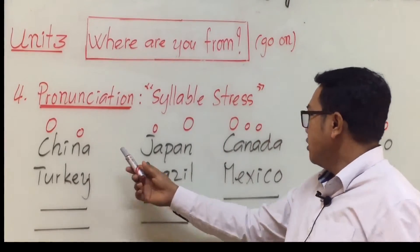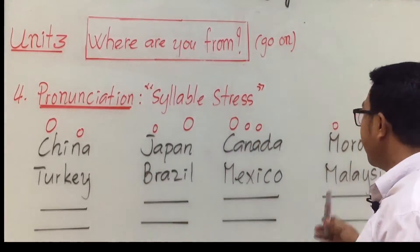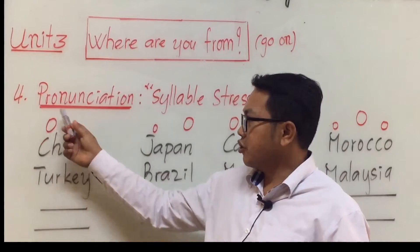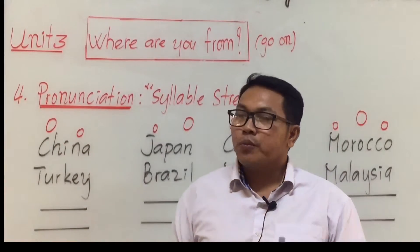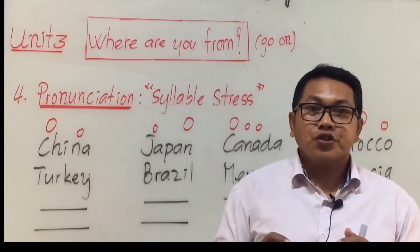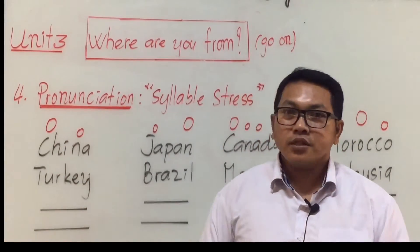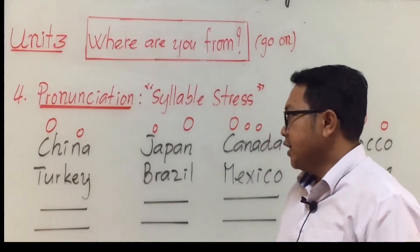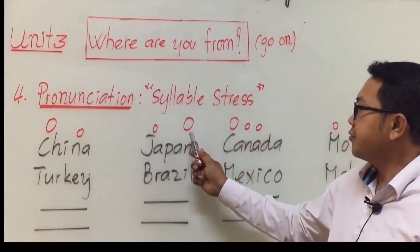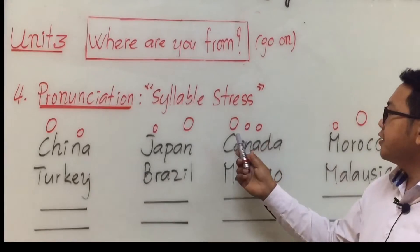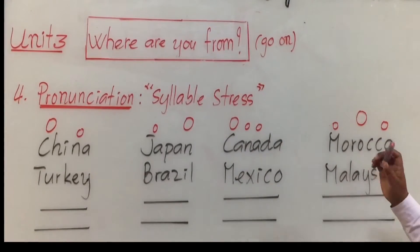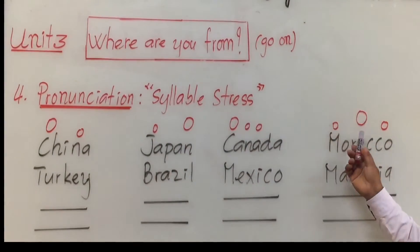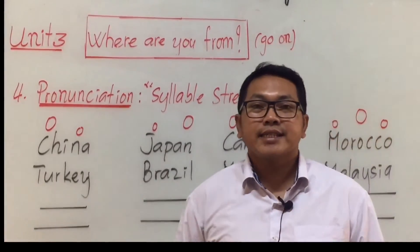Look at this — I have eight countries here. You can see some circles: a big one and a small one. The big circle shows the stressed syllable. Here the stress is on the first syllable, here on the second syllable, and here on the first and second because some words have two syllables and some have three syllables.